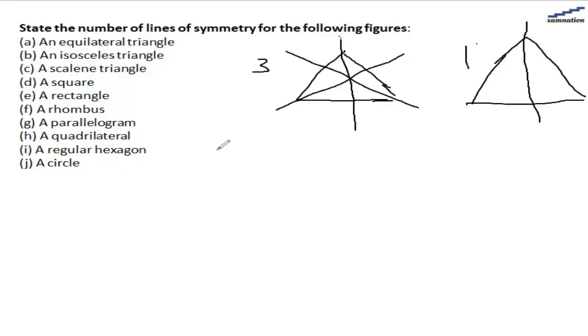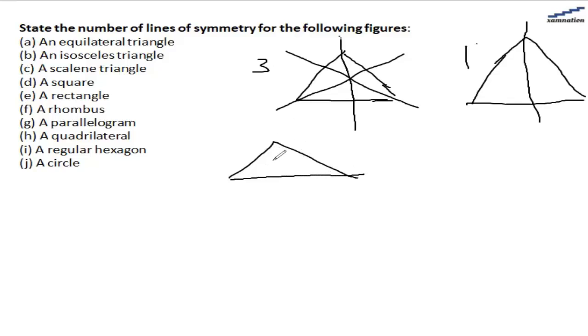For the scalene triangle, there is no line of symmetry. We cannot draw and divide the shape into equal halves. So, there are zero lines of symmetry.